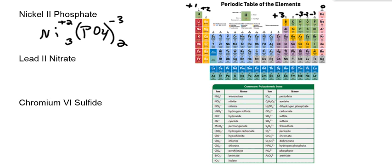So that's the correct formula for Nickel II Phosphate. Notice how the two doesn't just go down here - this Roman numeral two does not stand for the subscript, it stands for the charge of the metal and that needs to be crisscrossed.